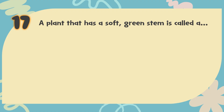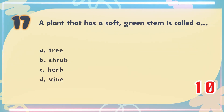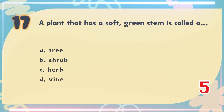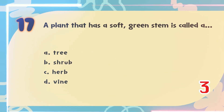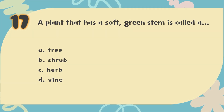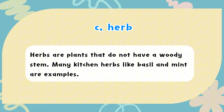Number 17: A plant that has a soft, green stem is called a — A. Tree, B. Shrub, C. Herb, D. Vine. The correct answer is C. Herb. Herbs are plants that do not have a woody stem. Many kitchen herbs like basil and mint are examples.